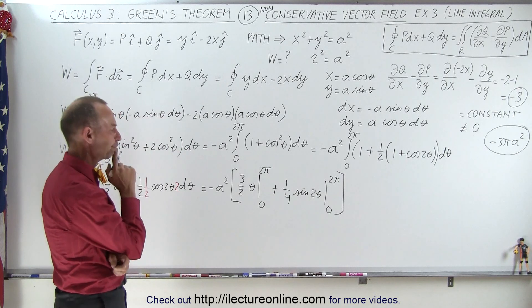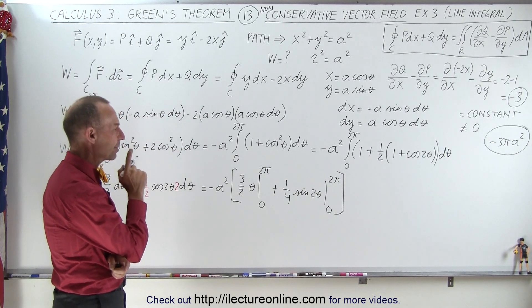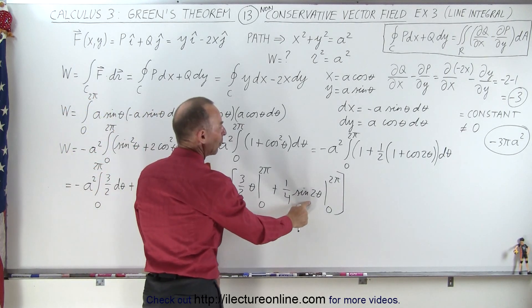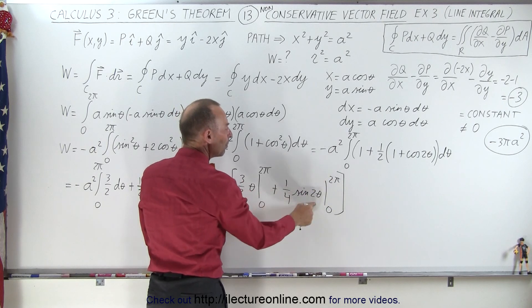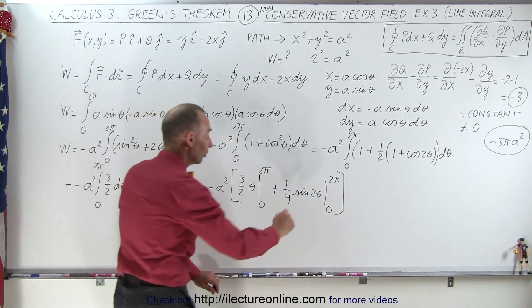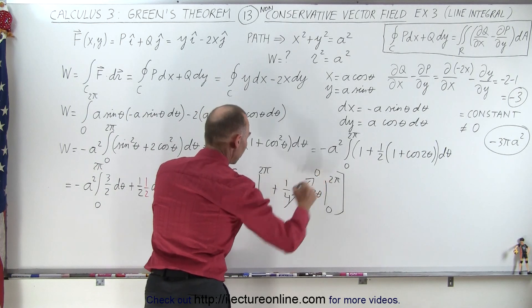Like so. Now, what I have here is I have the sine of 2 theta, when I plug in a 0 or plug in 2 pi, in all cases I will always get 0, so this portion of the integral goes to 0.